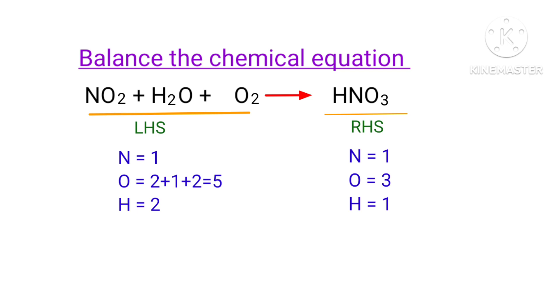In this equation, we need to balance the hydrogen atoms first. To do this, we need to put a coefficient of 2 in front of HNO3. The hydrogen atoms are balanced.